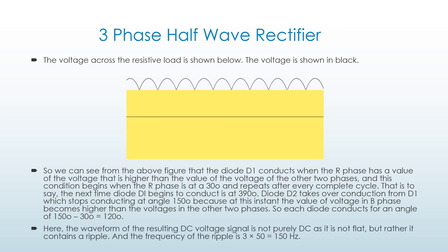The waveform of the resulting DC voltage signal is not purely DC — it is not flat but rather contains a ripple. The frequency of this ripple is 3 into 50, equal to 150 hertz.